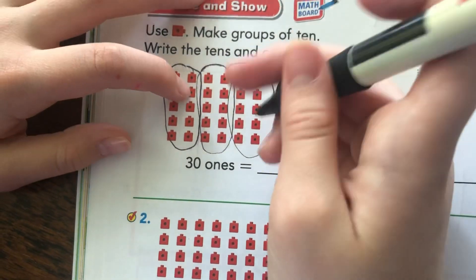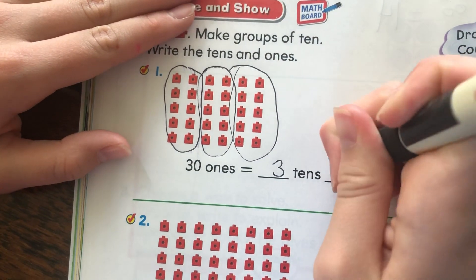Okay, so now I know that thirty ones equals three tens and zero ones. All right, what about this? This looks different.